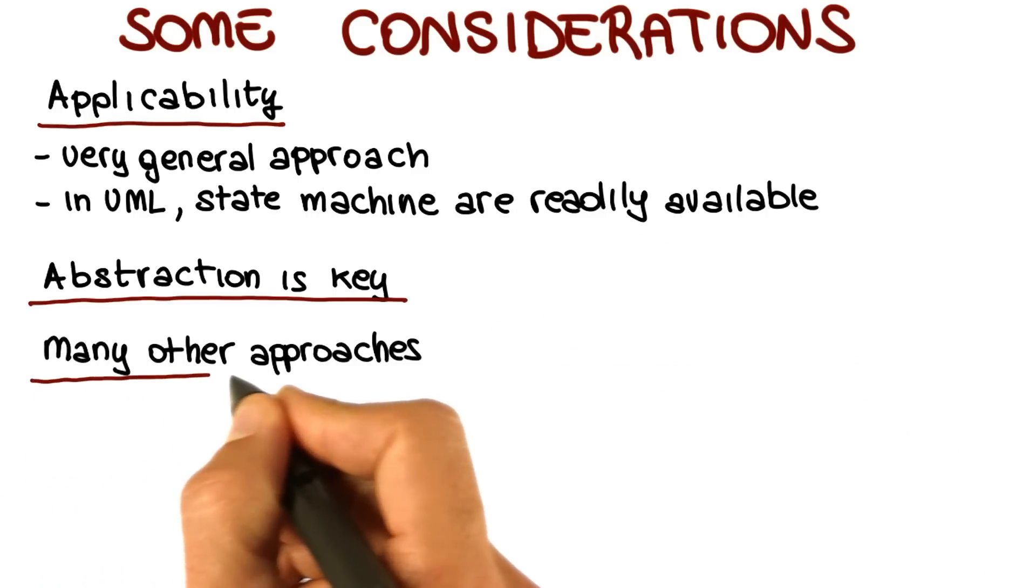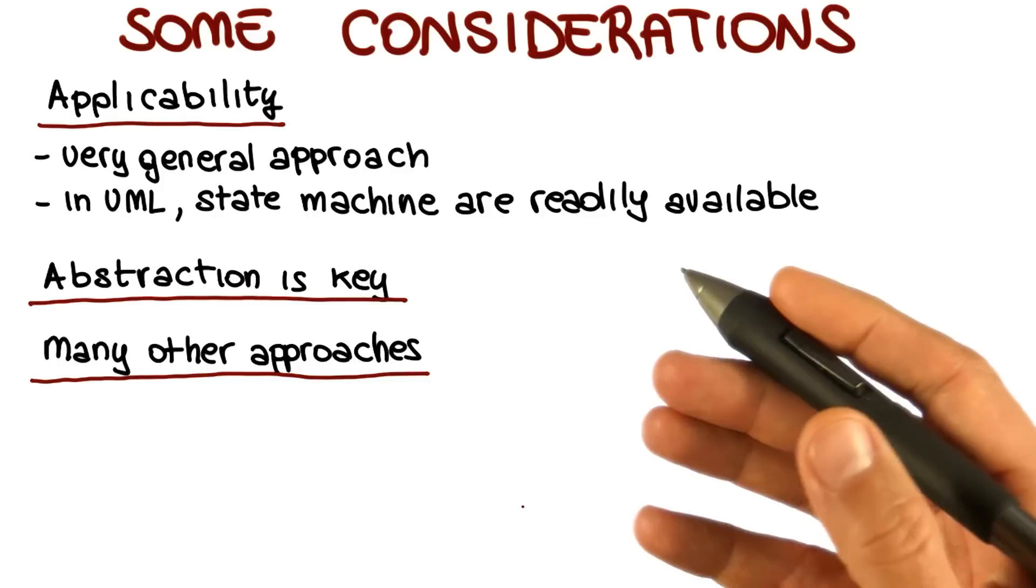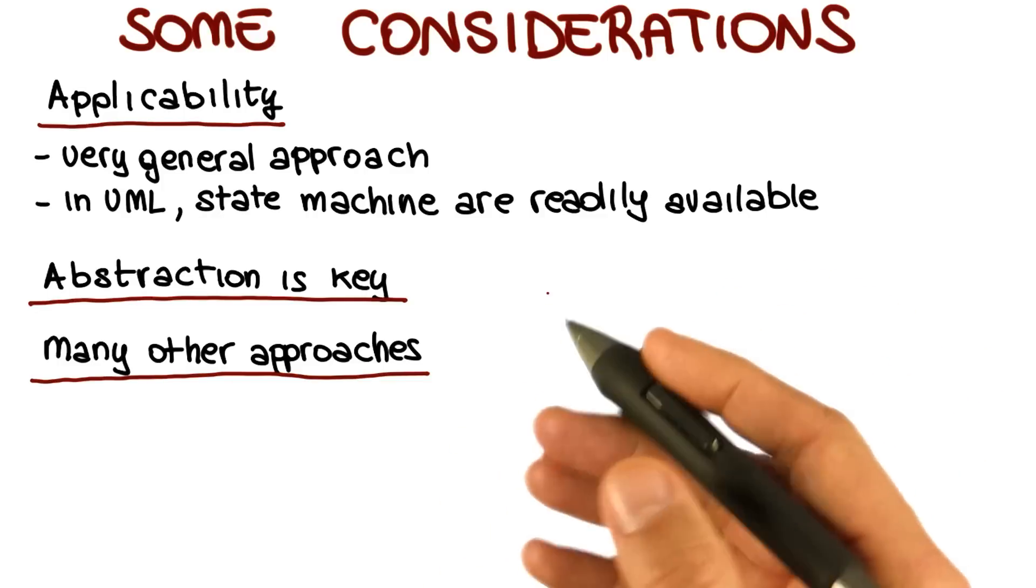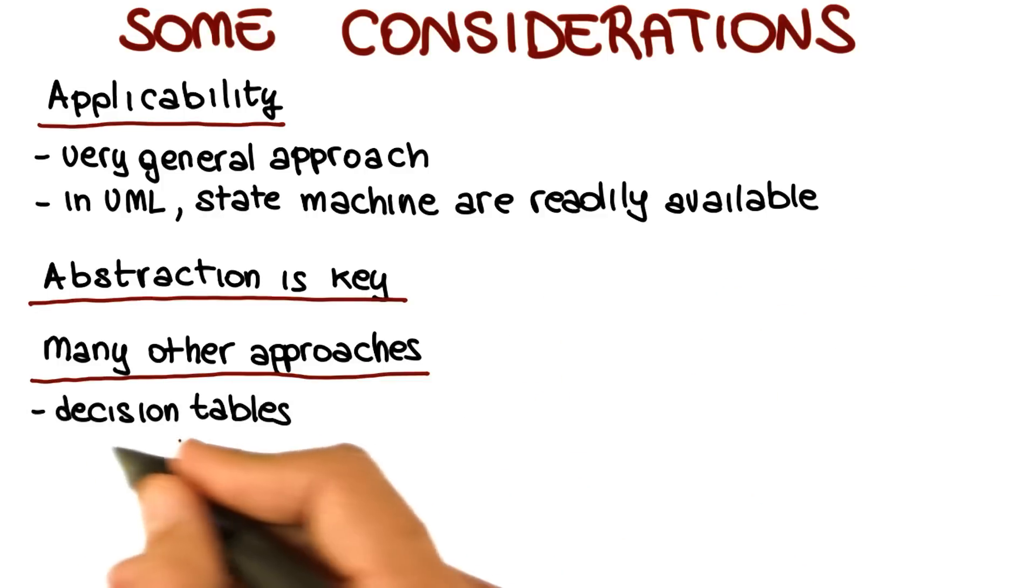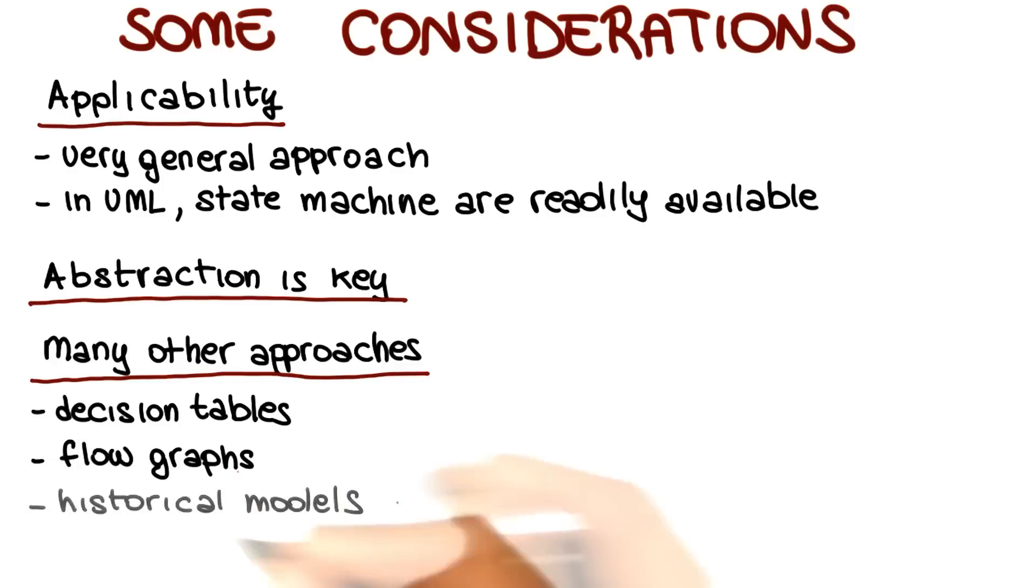Finally, there are many other approaches. We just scratched the surface and just saw one possible approach. But for instance, other models that you can use are decision tables, flow graphs, and even historical models—models that can guide your testing based on problems that occurred in your system in the past. I'm going to put pointers to additional materials in the class notes.